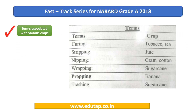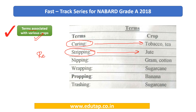Let us have a look at the first thing we are seeing today — the various terms associated with crops. So if you talk about curing, it is related to tobacco and tea. When I say stripping, it is related to jute. With jute, there is another very famous term: retting.